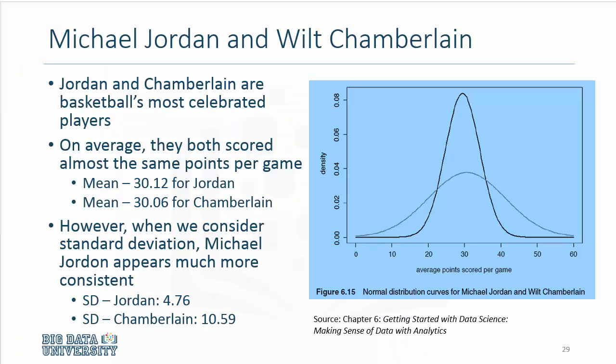Now, let me explain why mean and standard deviation have to go hand in hand, and I will revert to this example from basketball and talk about the two giants of basketball, Michael Jordan, my favorite, and Wilt Chamberlain, who preceded Michael Jordan. Now, if you consider their average score per game, you would notice that they didn't differ much. Their average was around 30 points for both Jordan and Chamberlain. However, when you look at the standard deviation or variance in their performance, Michael Jordan was at around 4.76 compared to Chamberlain, who was at around 10.59.